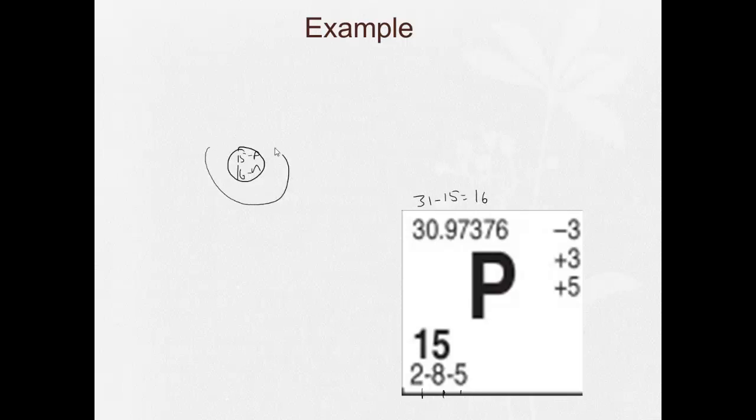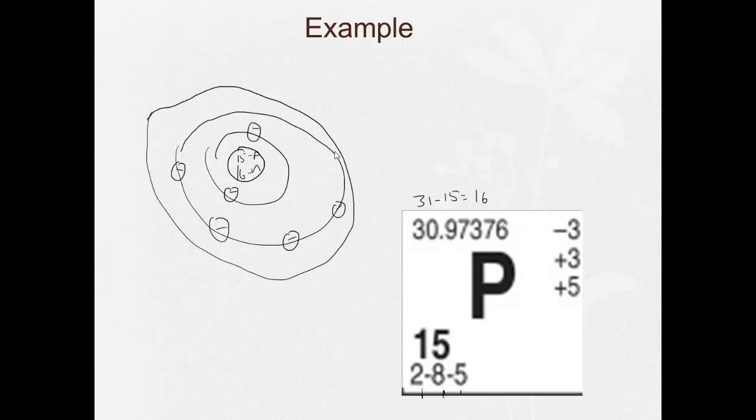Three shells. One, two, three. How many electrons in the first shell? Two. One, two. Eight in the second. One, two, three, four, five, six, seven, eight. How many in the third? Five.